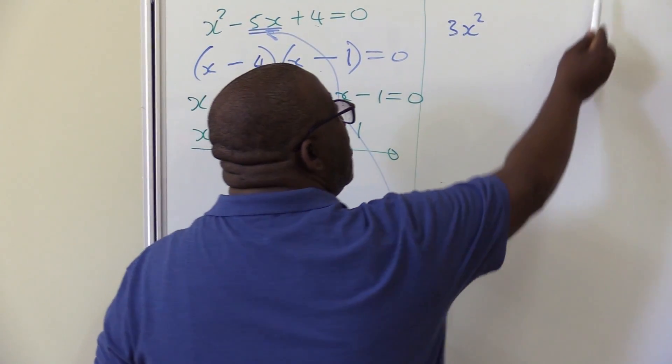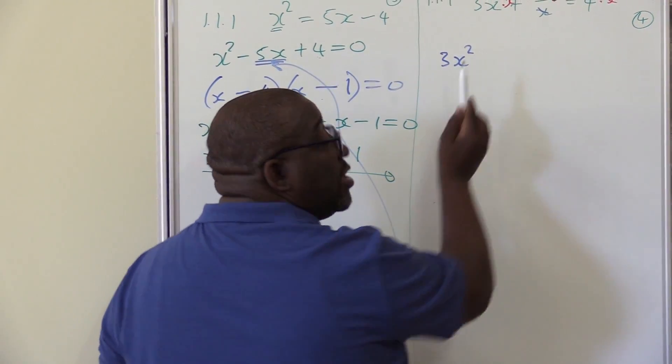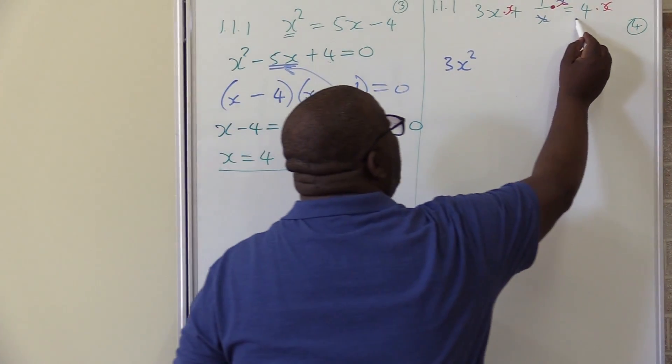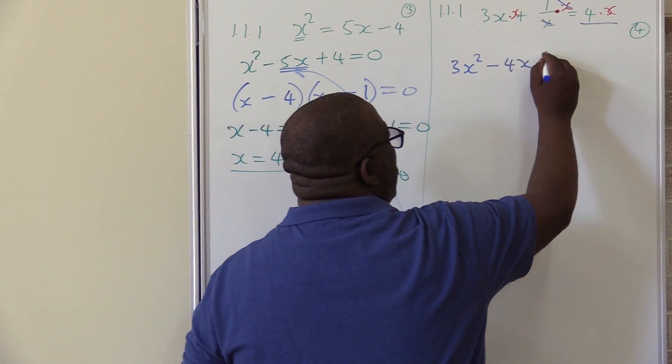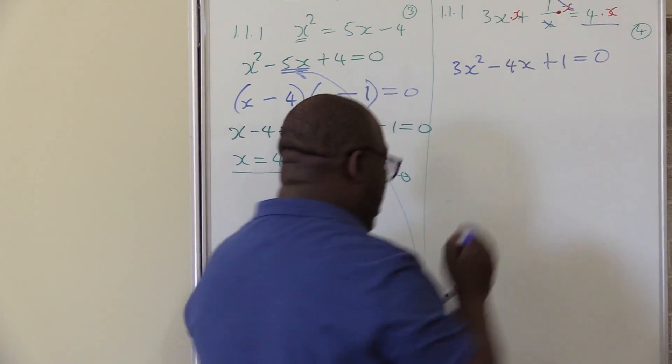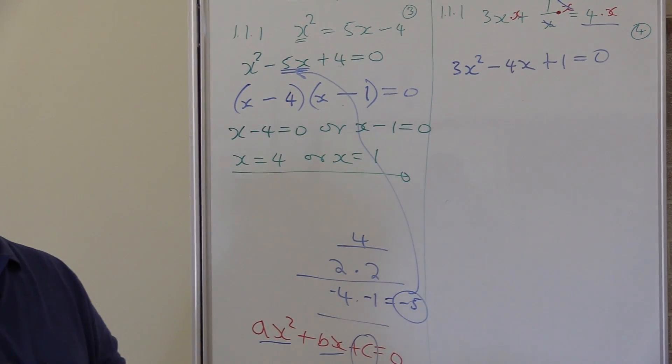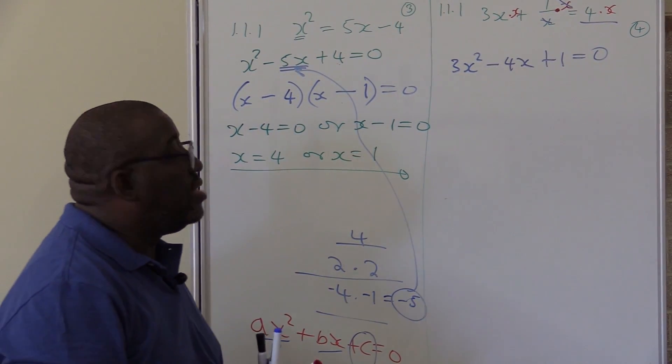This 4 times x should be ax squared, it must be followed by bx. So this is the one with bx, so I bring it this side, it will be minus 4x, then of course my constant term 1. We have 0 on the other side. This is the stage that we wanted. We wanted it in the form of ax squared plus bx plus c. Now it is in that form.